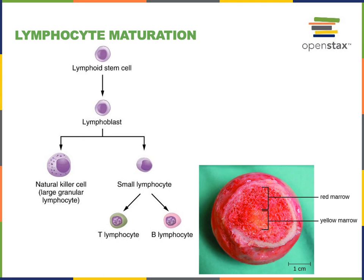An immature B lymphocyte first goes through a process of positive selection where lymphocytes with functional receptors are stimulated to continue their maturation, and apoptosis removes lymphocytes with receptors that are not functional. Following positive selection is a process of negative selection that stimulates apoptosis in lymphocytes that have receptors capable of binding to self-antigens. Self-antigens are molecular patterns associated with the cells of our own body, and negative selection eliminates those lymphocytes that would cause an autoimmune disease where the adaptive immune system starts to attack antigens produced by our own body.